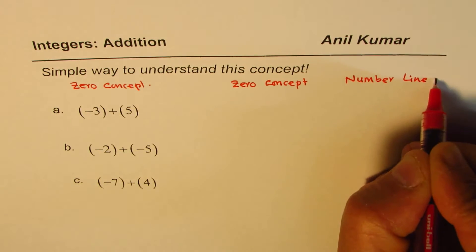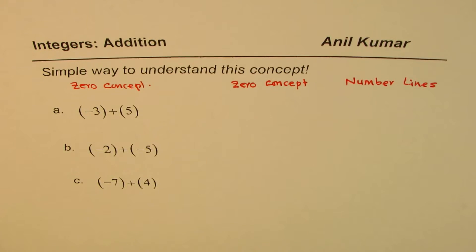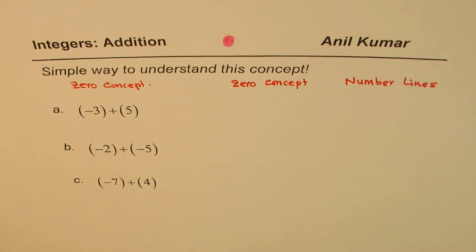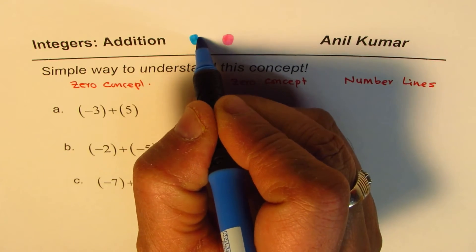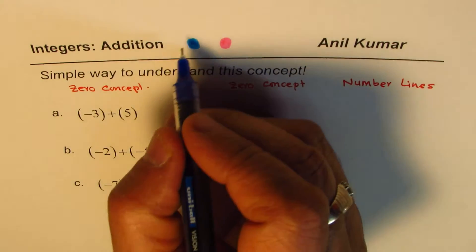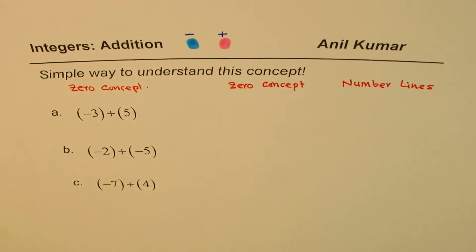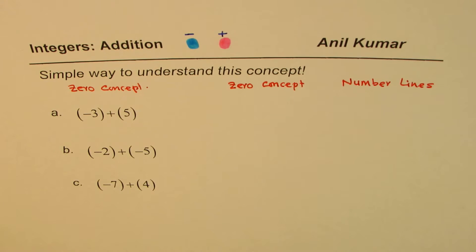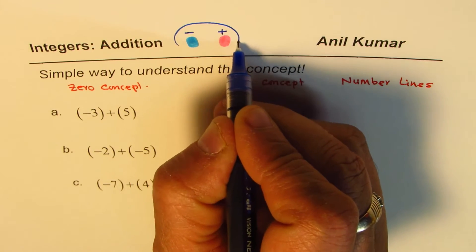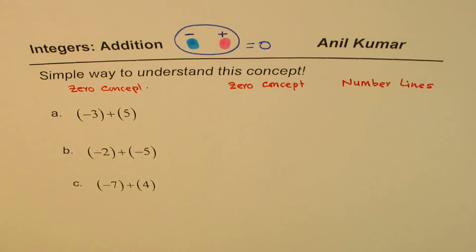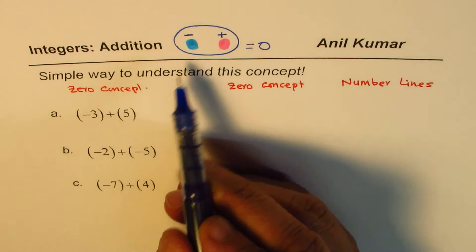For the zero concept I will take two colors — one being positive and the other being negative. The blue one is negative for us and the red one is positive. If you combine these two, plus and minus, you get zero. That is the zero concept: one negative and one positive makes zero, one plus one minus will make zero.